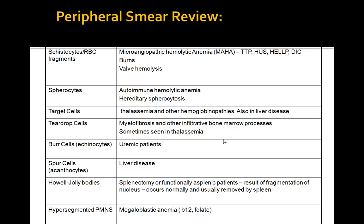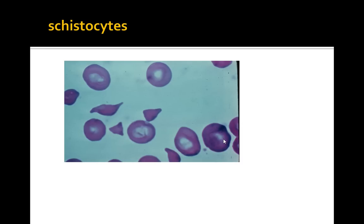Patients can also have blasts, which are a sign of leukemia or lymphoma. Auer rods can narrow your differential to acute myeloid leukemia. This approach is extremely helpful as you evaluate anemia in your patients. We have a few slides here to review.